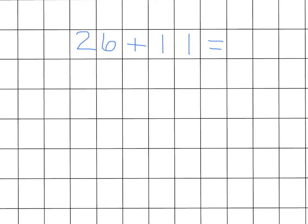When adding a near multiple, we first add 10 and then adjust. For example, 26 add 10 equals 36. We've added 10, but we actually had to add 11, so we need to add one more to the answer. So, 36 add 1 equals 37.